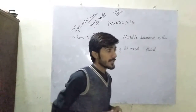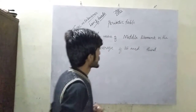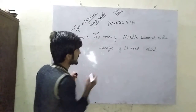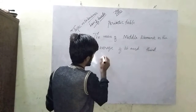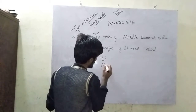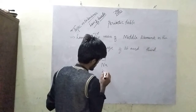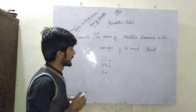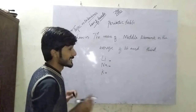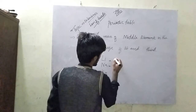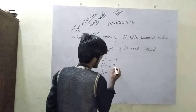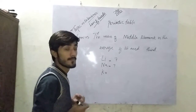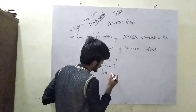The first example of Dobereiner's Law of Triads is lithium, sodium, and potassium. The atomic mass of lithium is 7. You may not know the mass of sodium, but the atomic mass of potassium is 39. Using the law, we can calculate the mass of sodium.